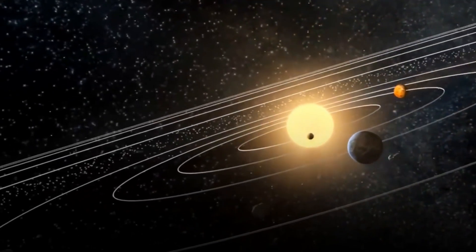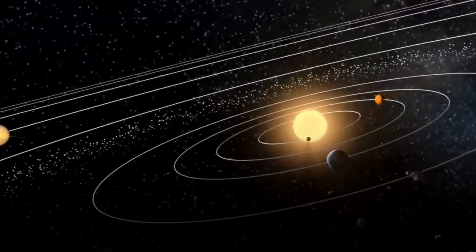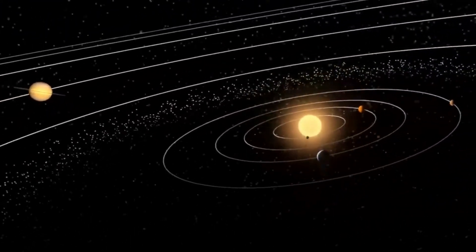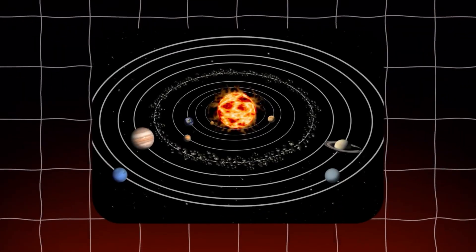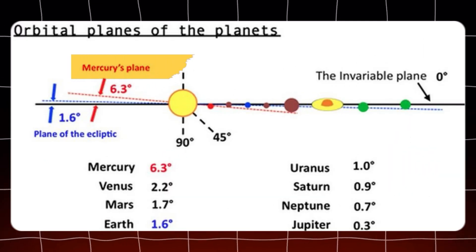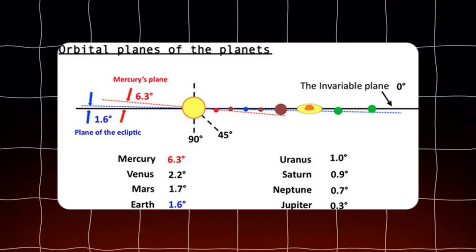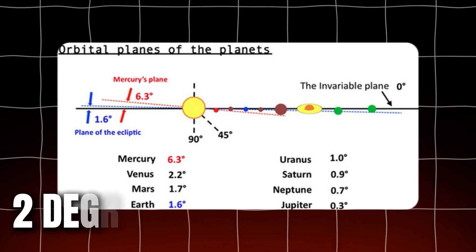The eight planets of our solar system orbit within an almost flat plane, known as the invariable plane. This alignment is remarkably precise, excluding Mercury, which is more tilted. The other planets deviate from this plane only about two degrees.